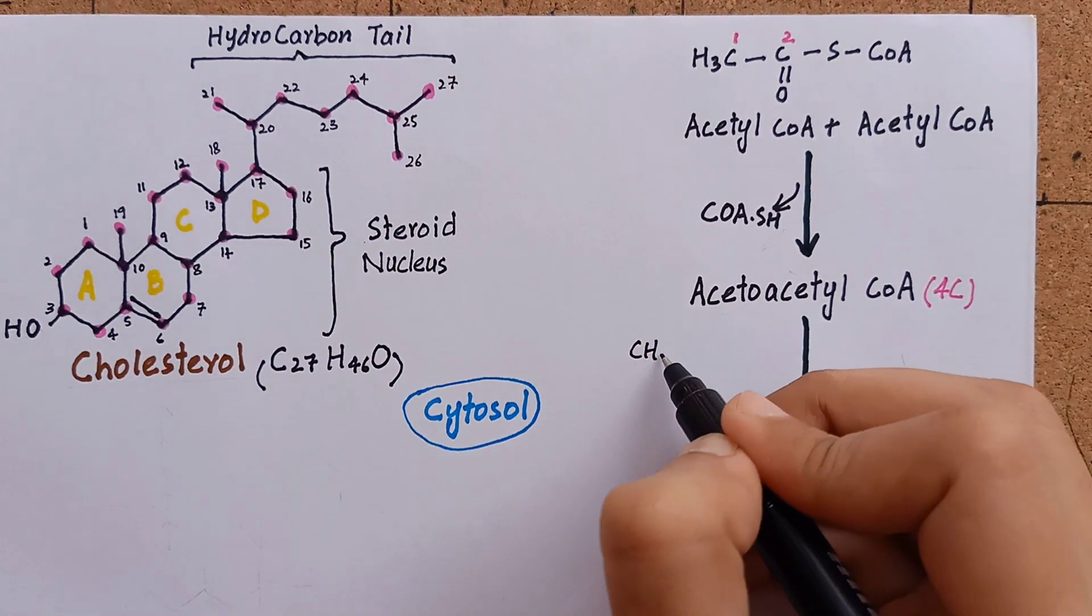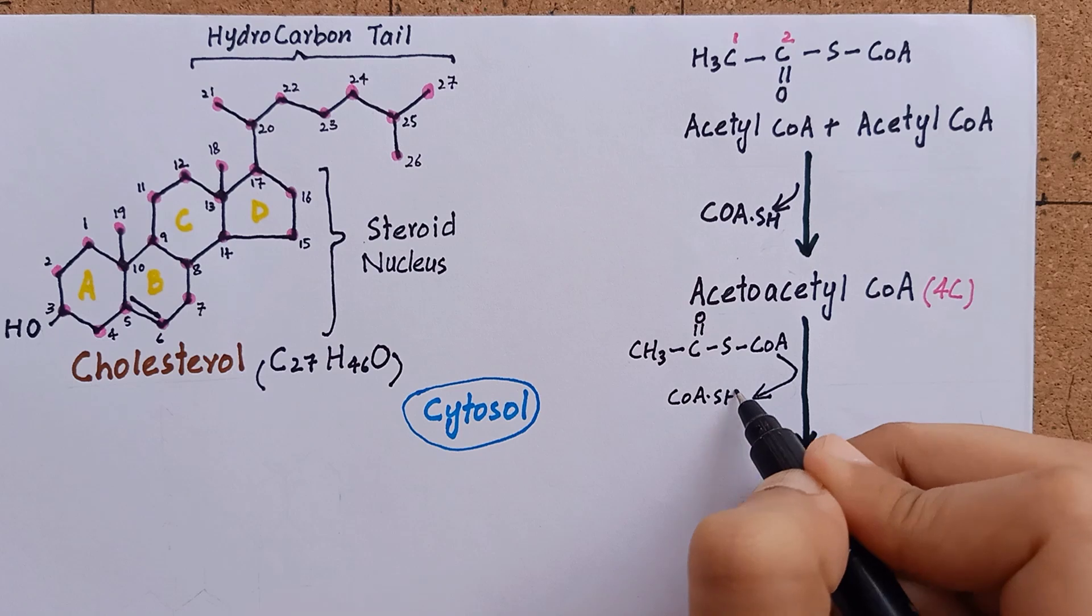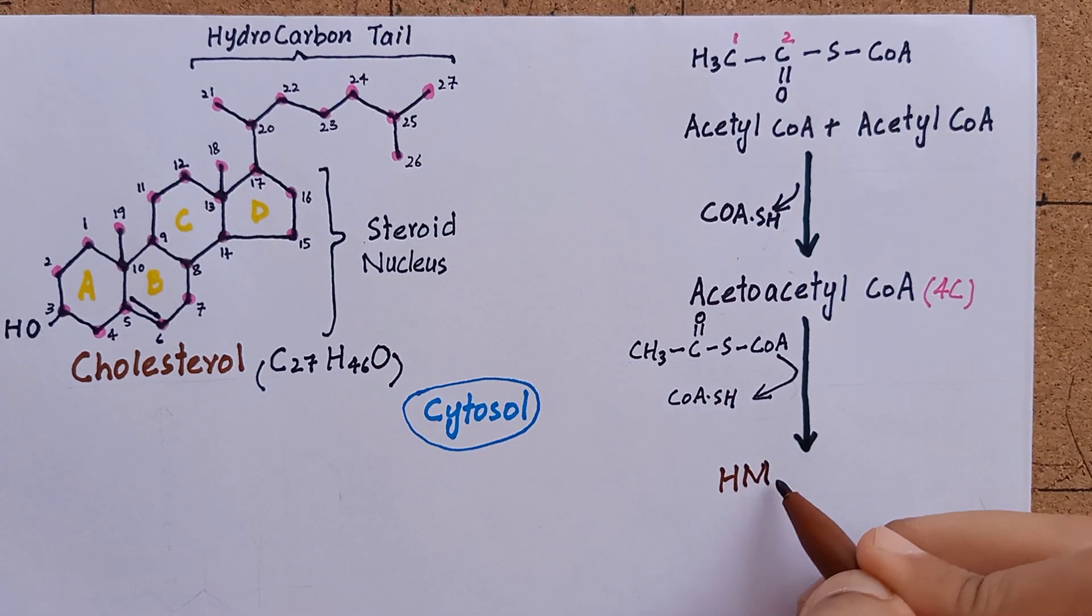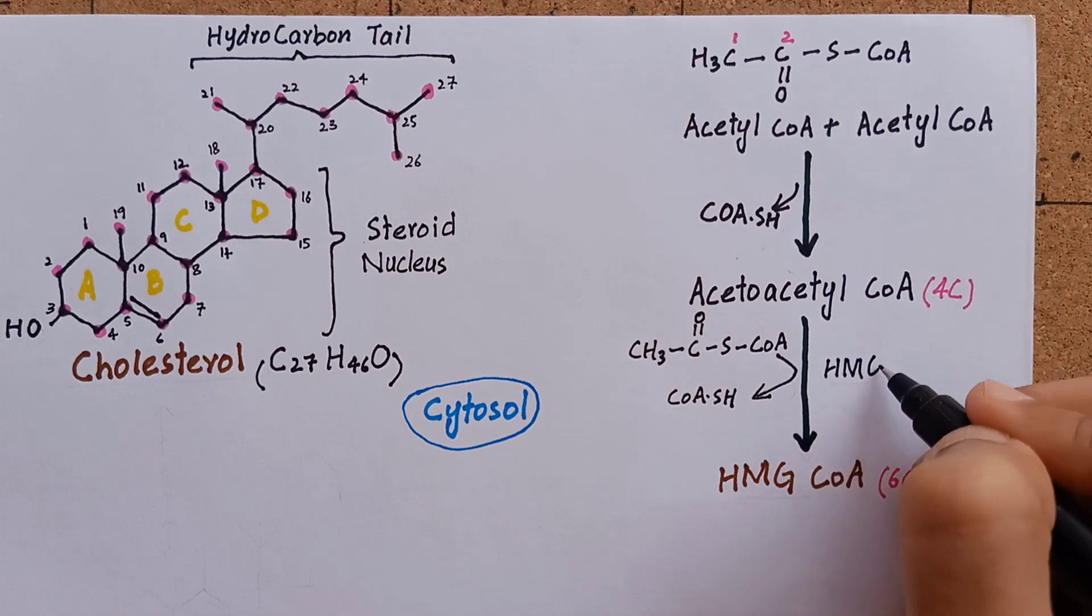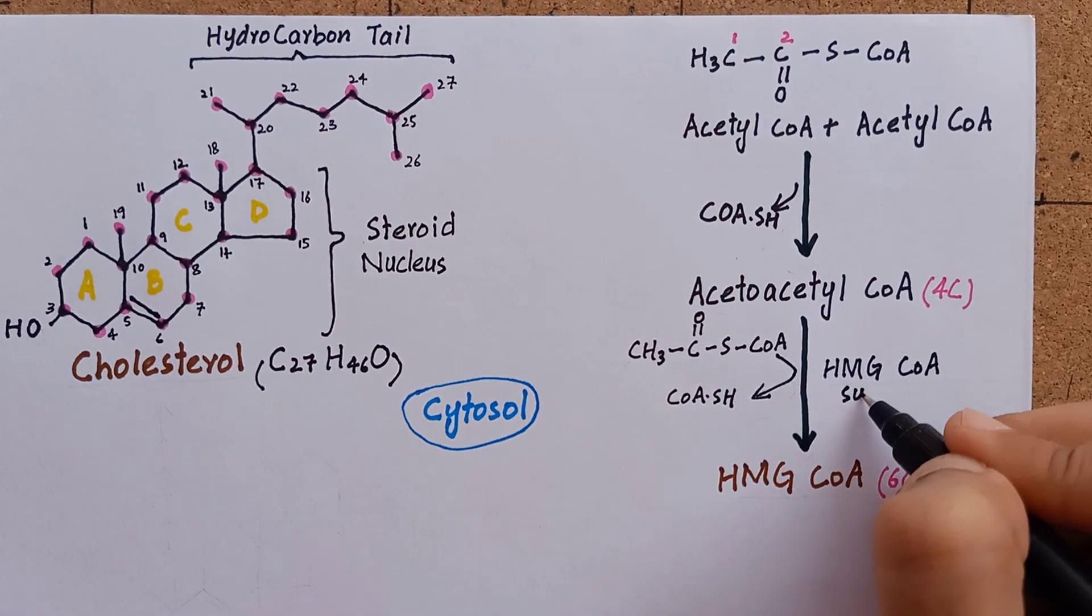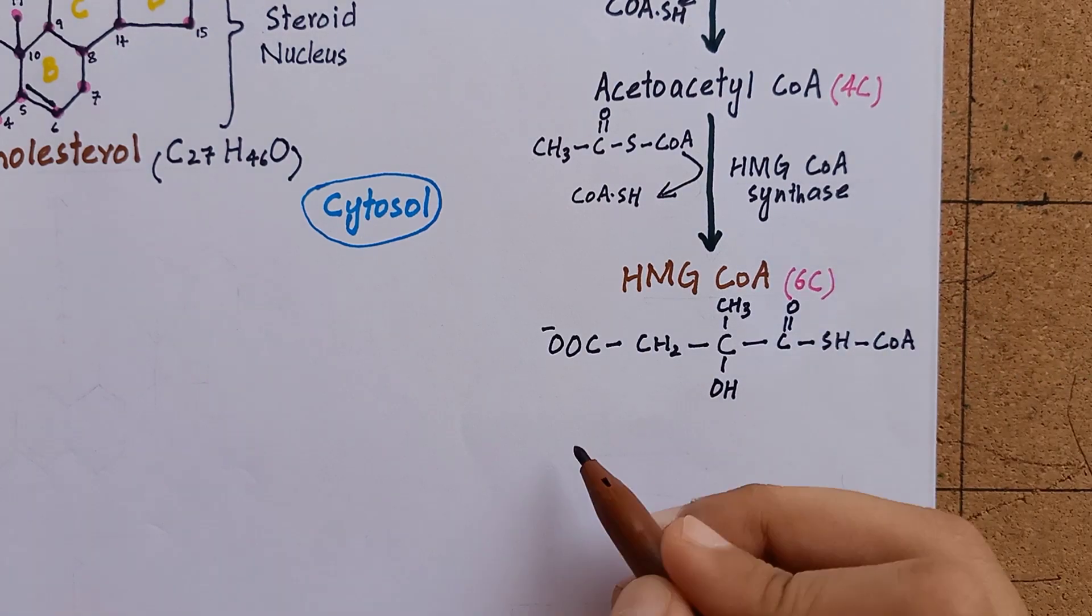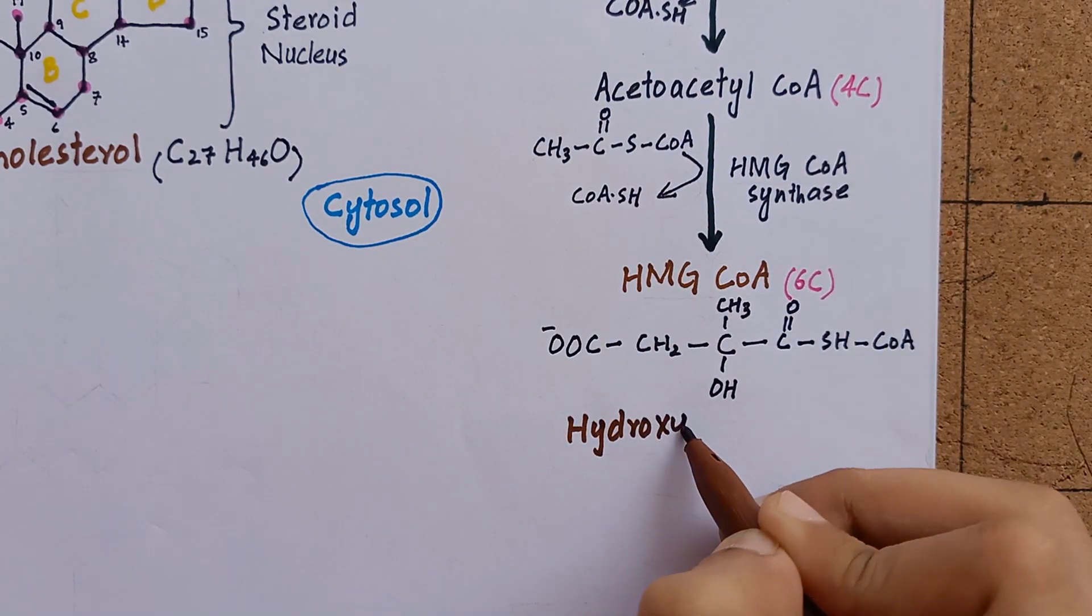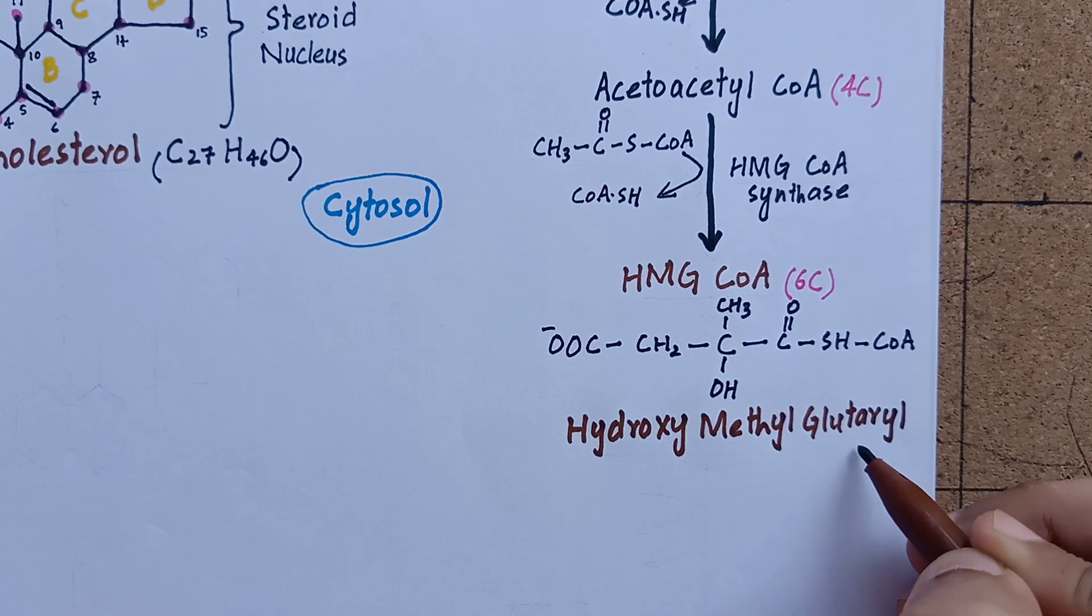Now, we will add another molecule of acetyl-CoA and its CoA group will leave, obviously, and the final molecule will be a 6-carbon HMG-CoA. Because a new molecule is synthesized here, the enzyme will be called HMG-CoA synthase. This is the structure of HMG-CoA. HMG-CoA is short for hydroxy-methyl-glutaryl-CoA.